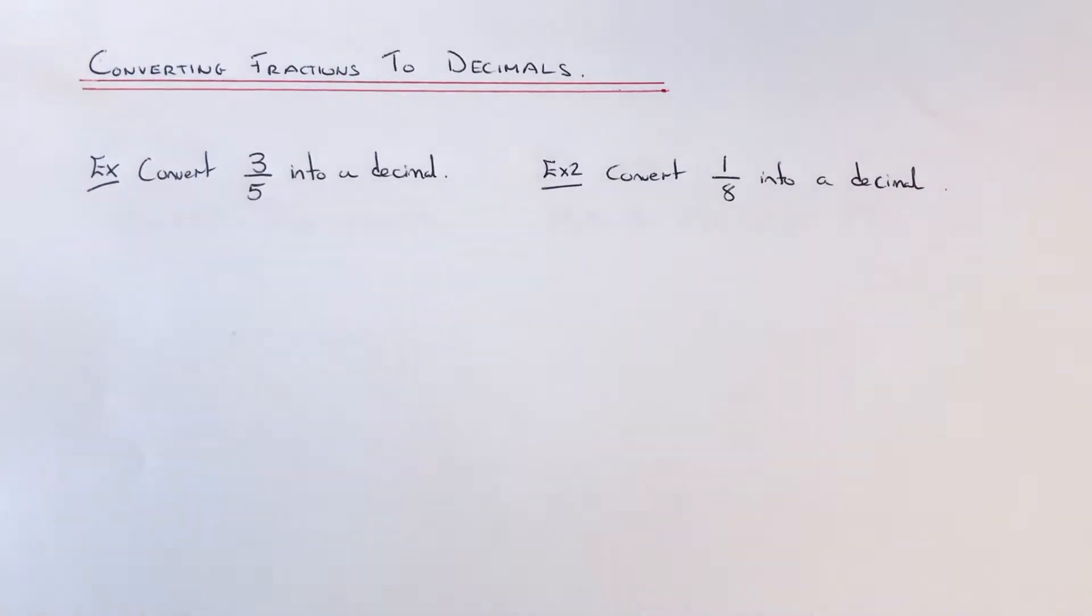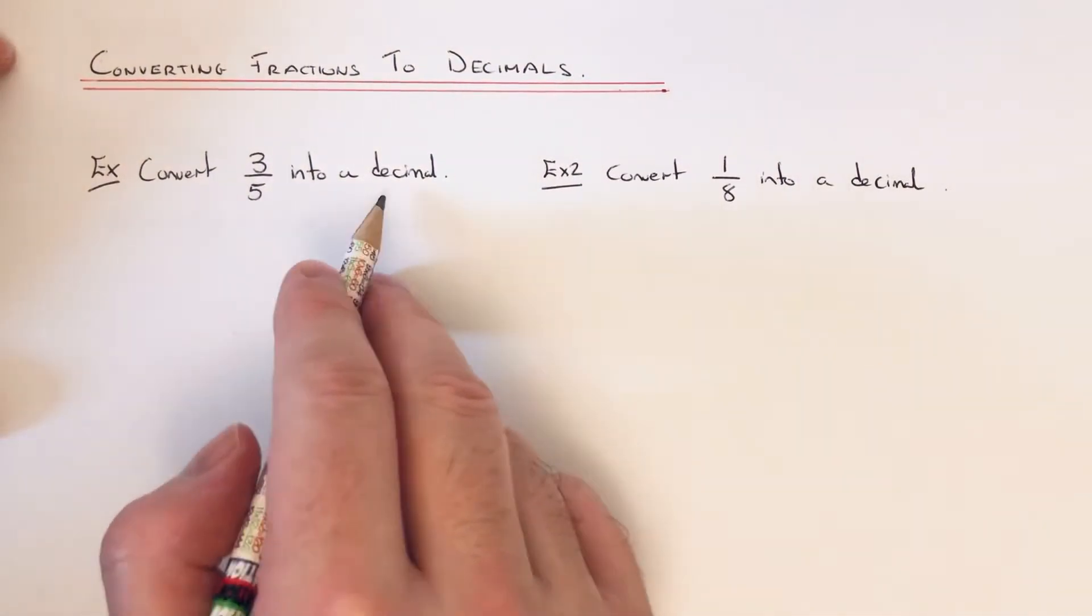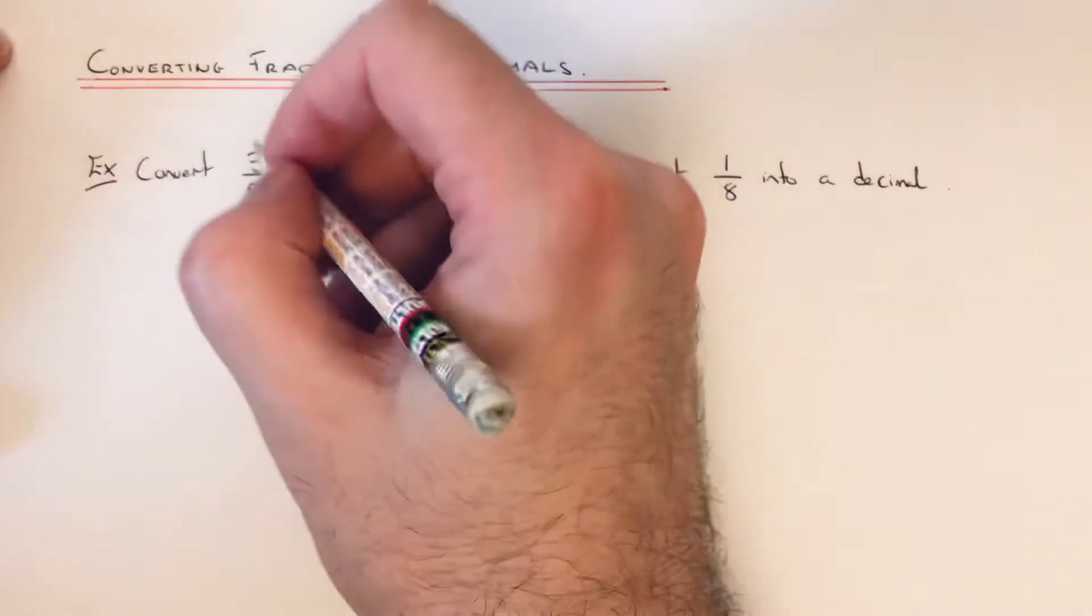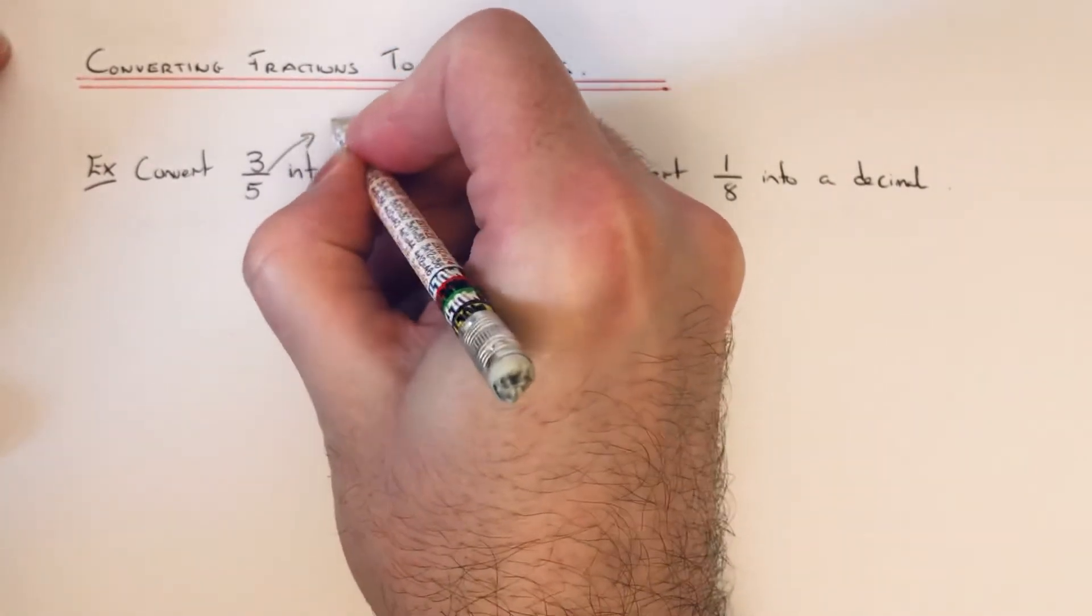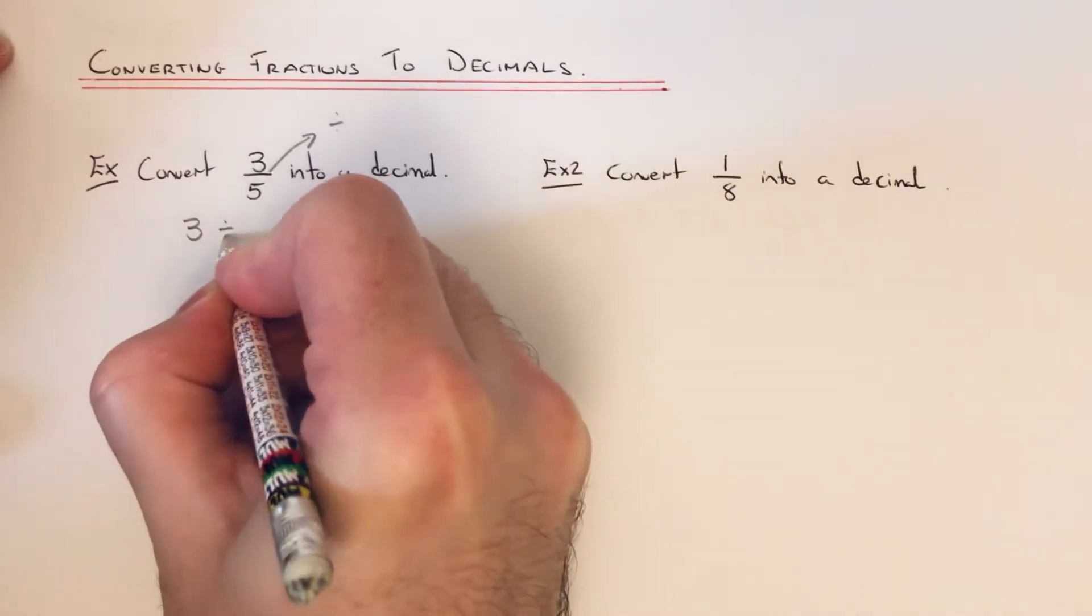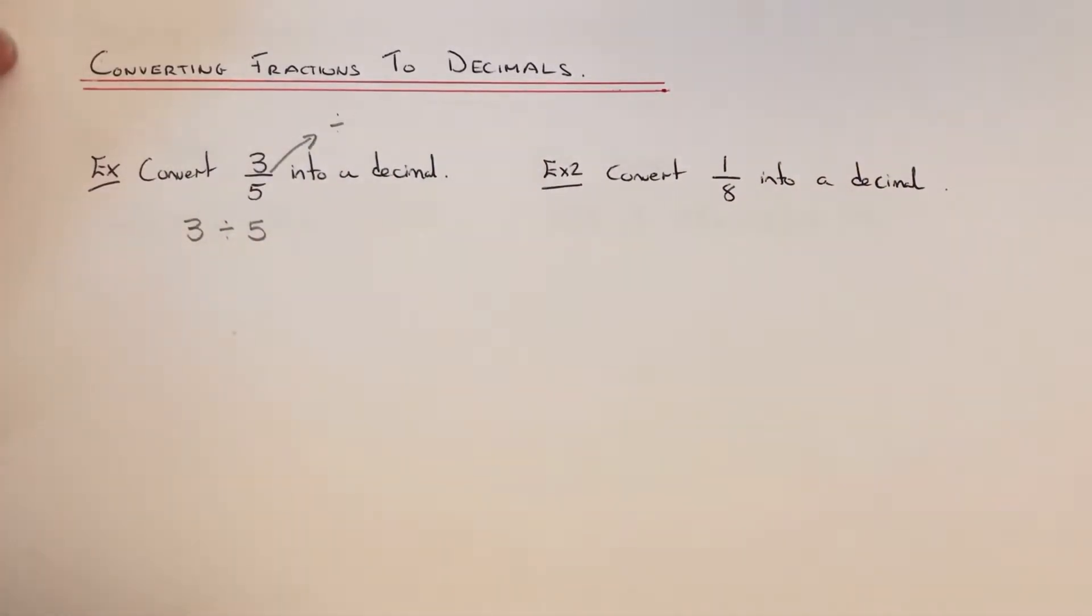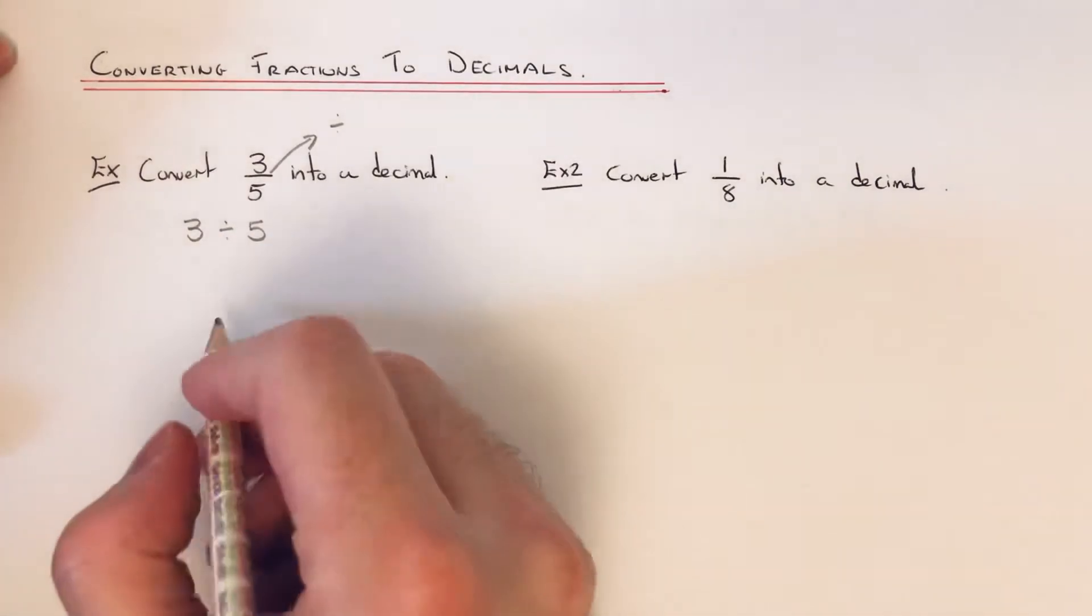Let's convert 3/5 into a decimal. All you have to think of is that this line in the middle of our fraction means divide, so it means 3 divided by 5. We're going to work this out using short division or the bus stop method.